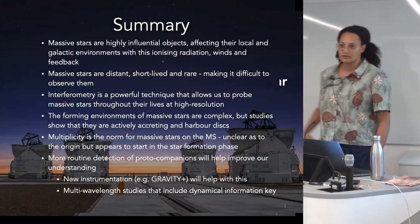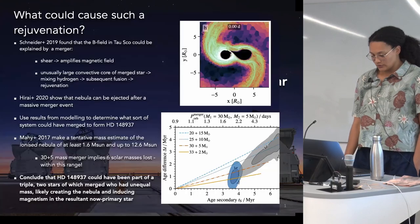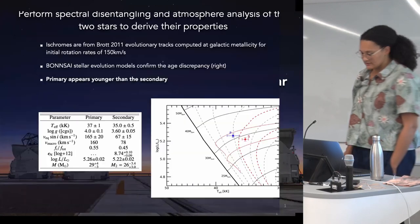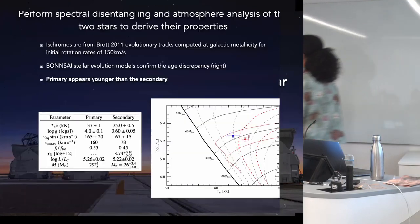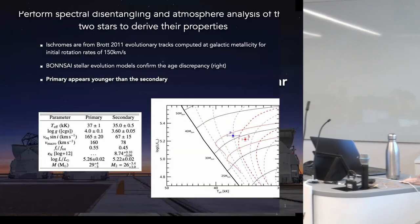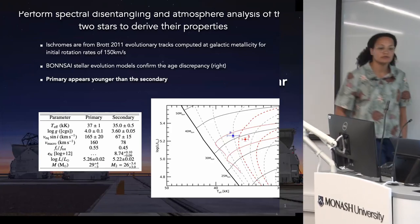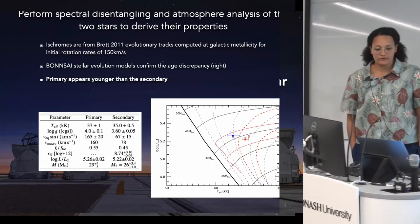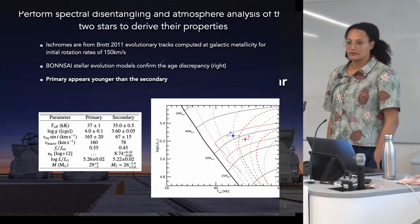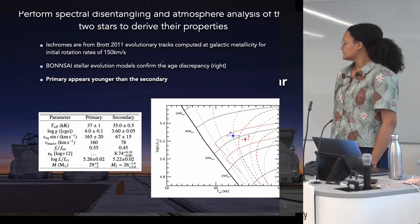Q: Can you remind me what the masses are? A: The masses are 29 versus 26 solar masses — both clearly O stars.